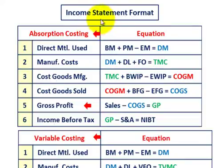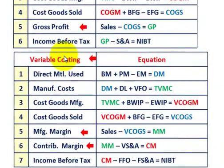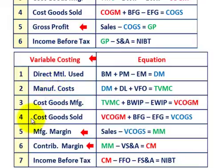Now let's look at the income statement format for absorption costing versus variable costing. Each method follows different steps to arrive at net income before tax. For absorption costing, we calculate gross profit. For variable costing, instead of gross profit, we calculate a manufacturing margin and a contribution margin.